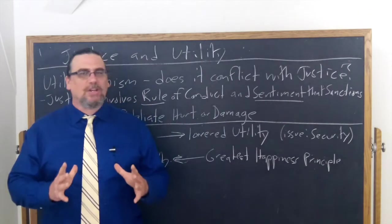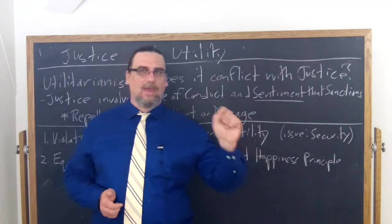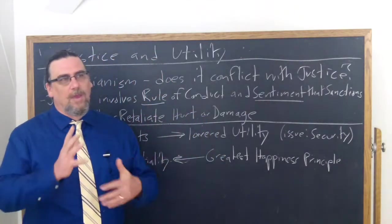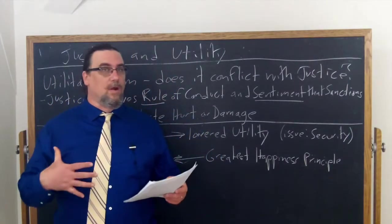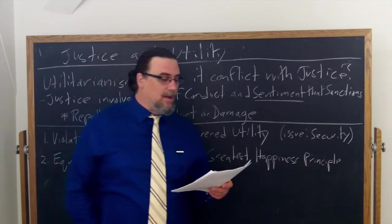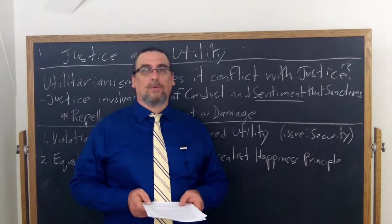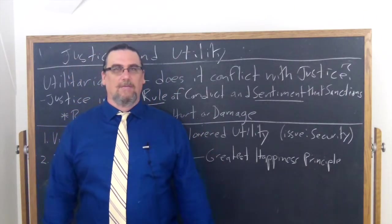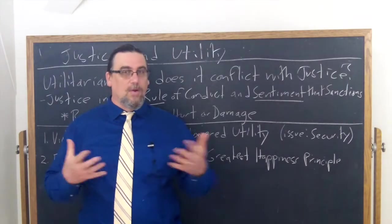Notice that he's saying that justice doesn't just include a rule; it's not just a decision procedure. It's also something that we feel. It's a sentiment, a moral sentiment in fact, not just a pure emotional response, but something that has a kind of rationale to it and that we find rooted in our own psyches, sanctioning, he says, the rule. And he says this rule must be supposed common to all mankind and intended for their good. The other is a desire that punishment may be suffered by those who infringe the rule. Mill is a typical enlightened man of the 19th century, but he still thinks that there is some need for punishment in order to have justice.